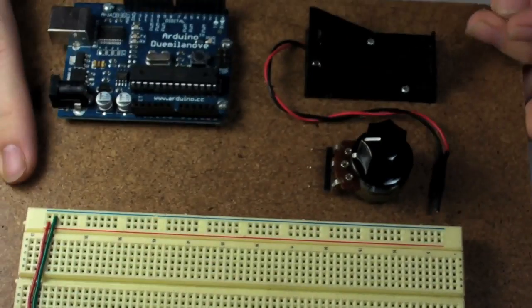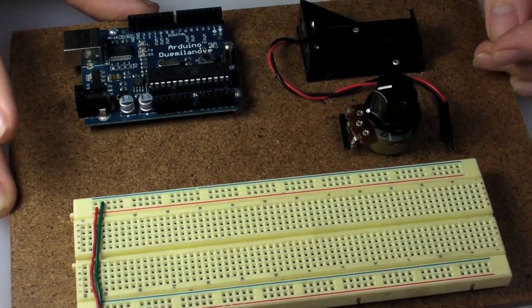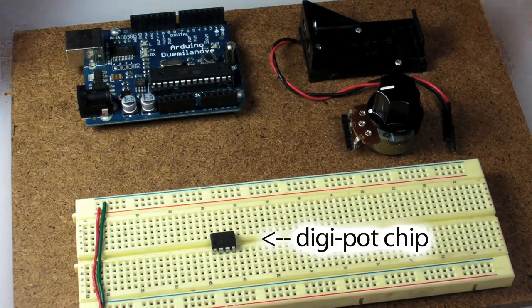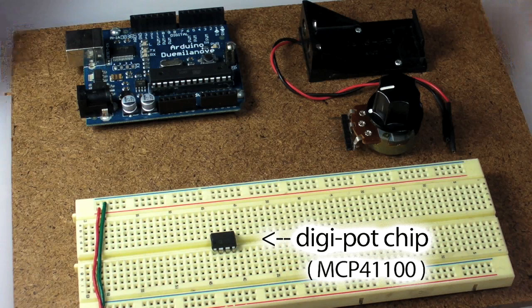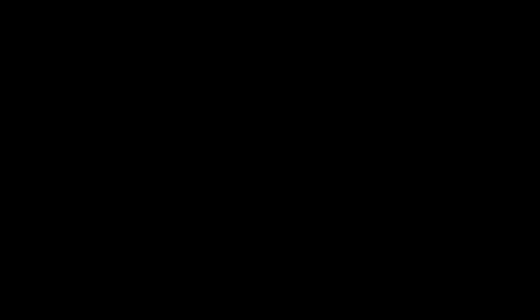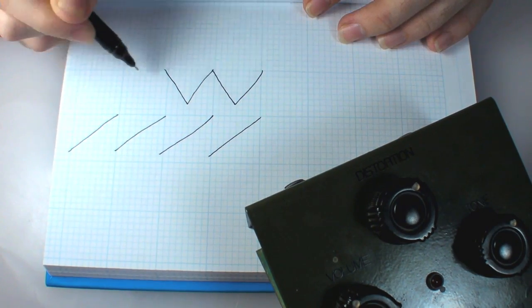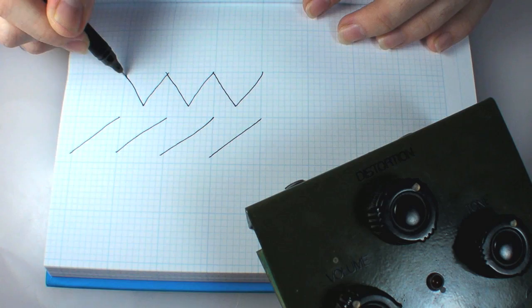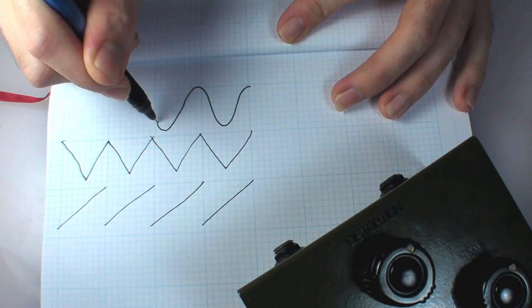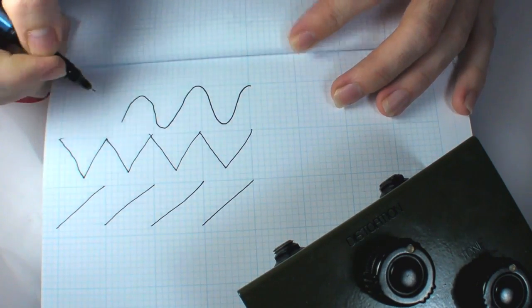Along with the Arduino, I'll be using a digital potentiometer chip. By using this chip in place of the pedal's original distortion pot, I can continually change the amount of distortion using an array of values called a wavetable. I'll experiment using a few different types of waves to see which sounds the best.